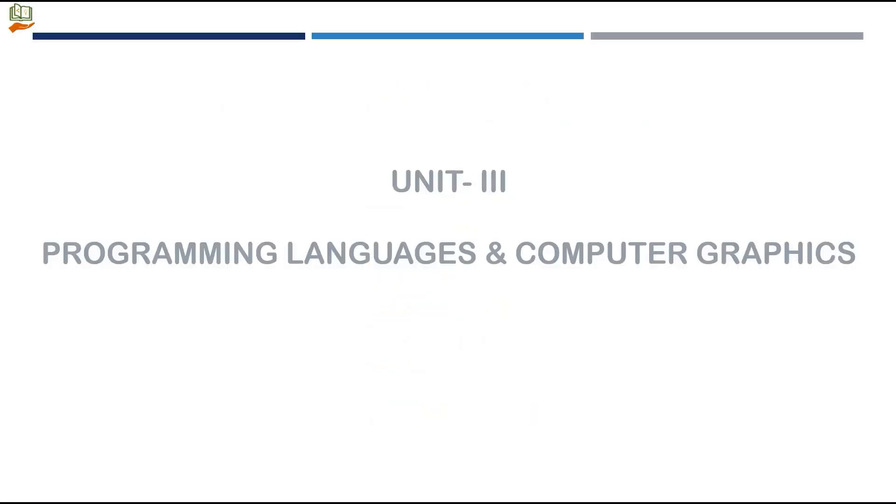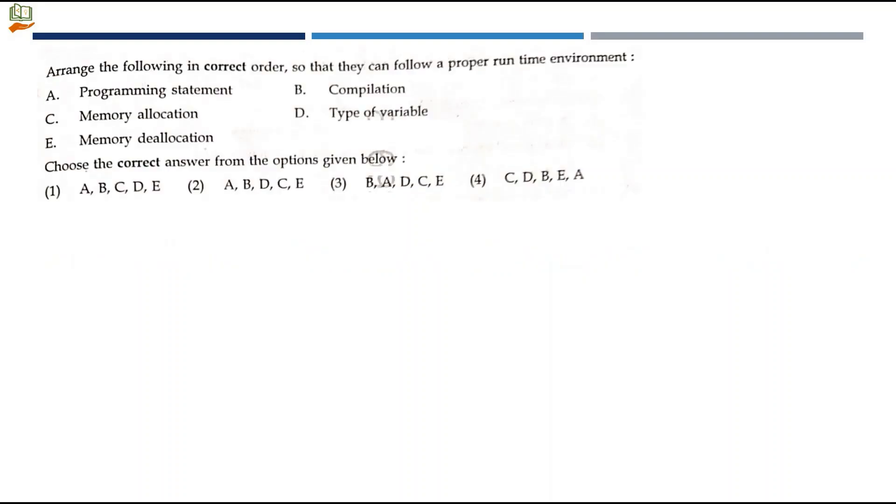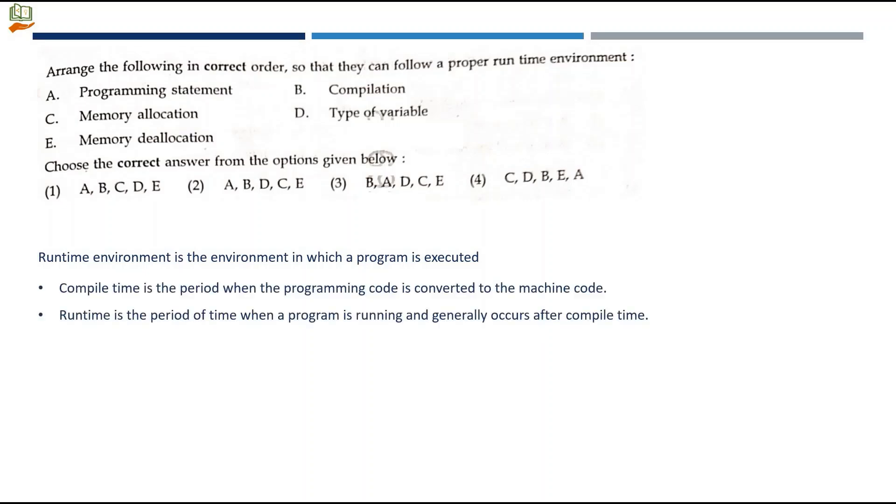Let's solve unit 3 programming languages and computer graphics questions. Arrange the following in correct order so that they can follow a proper runtime environment. Runtime environment is the environment in which a program is executed. In this environment, we have two kinds of time: compile time and runtime. Compile time is the period when the programming code is converted to machine code. Runtime is the period when a program is running and generally occurs after compile time.